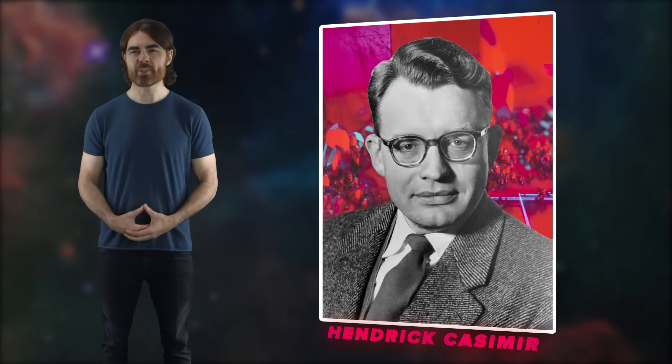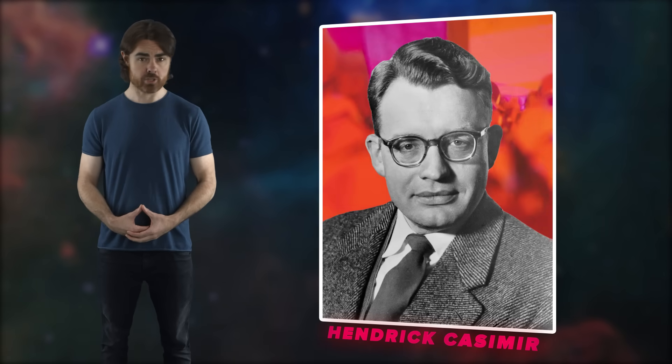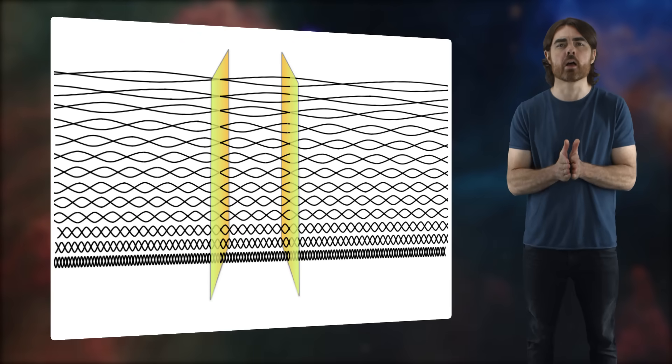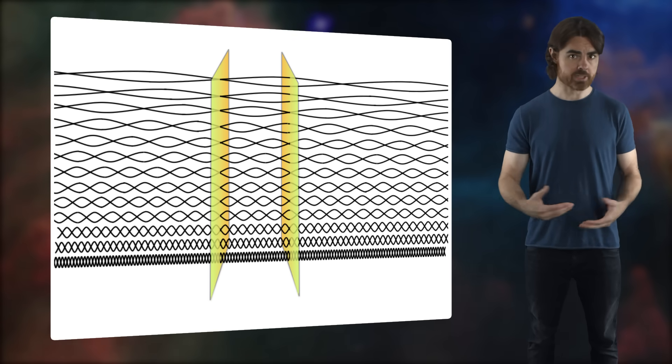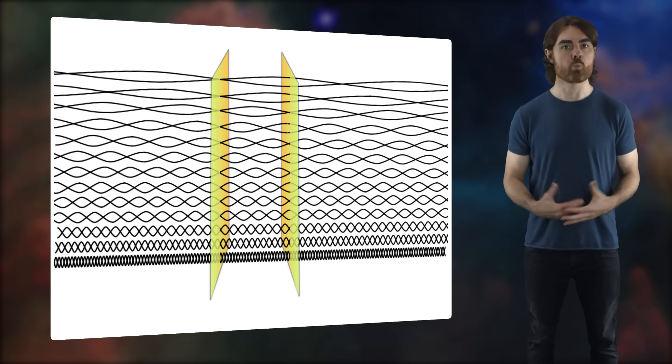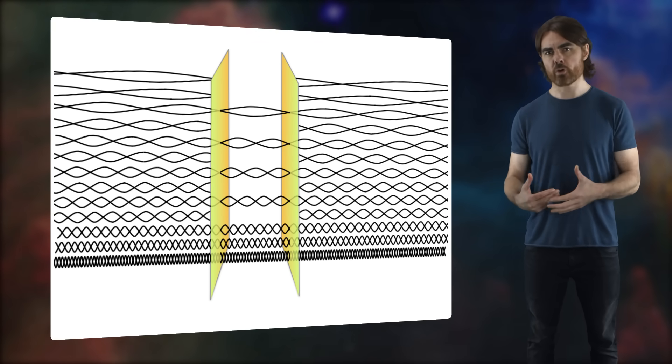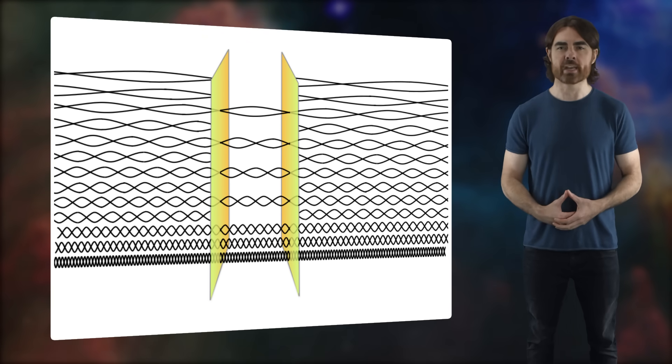Another way to hunt for virtual particles is through their bulk effect on the vacuum. If quantum fields are abuzz with particles popping into and out of existence, then the so-called zero-point energy of those fields should not be zero — completely empty space should have some real energy, it should have vacuum energy. In 1948, the Dutch physicist Hendrik Casimir came up with a brilliant scheme to detect this. He imagined two conducting plates brought so close together that only certain virtual photons could exist between the plates, in the same way that an organ pipe or a guitar string of a particular length only resonates with waves of certain frequencies. Any non-resonant virtual photon would be excluded, reducing the vacuum energy between the plates.